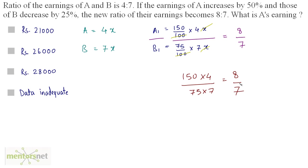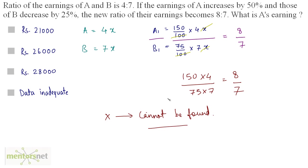Can you go further ahead? There are no remaining variables to find. We cannot find the value of x because there is no such extra data given to us. Hence, the data is inadequate in this question — you cannot find anybody's earning. So option D is the correct answer.